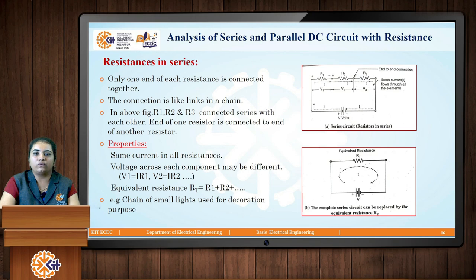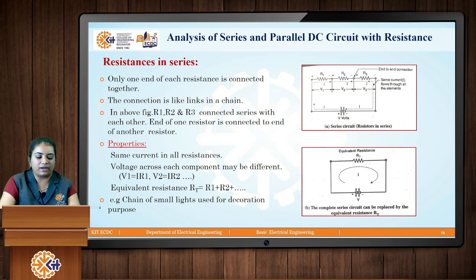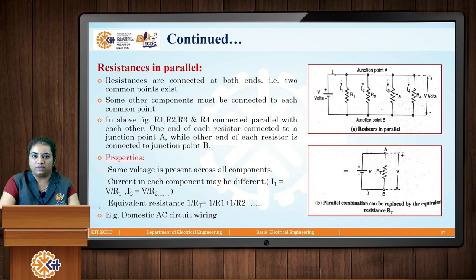Finally, we get the equivalent resistance Rt which equals R1 plus R2 plus R3 and so on. The use of this series connection is seen in a chain of small light bulbs used for decoration purposes — all those bulbs are connected in series to get similar brightness.